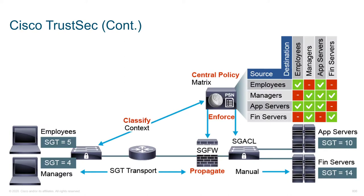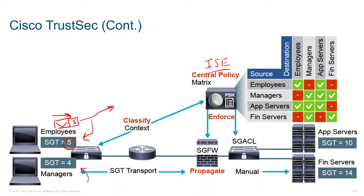Looking at it in more detail, we've got employees set with security group tag 5 and managers with security group tag 4. Where do these group tags come from? We could do a port-by-port or IP-based configuration statically on the switch, but a lot of times we tie this into our identity services engine. When people authenticate to the network, we can push a security group tag onto the user. So as traffic is sent from employees into the network, on ingress we add the extra label with the 5 on it, and that tag is propagated with the Ethernet frame throughout the environment.